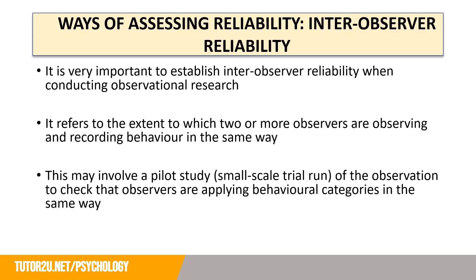The second way of assessing reliability is inter-observer reliability. It's very important to establish inter-observer reliability when conducting observational research. This refers to the extent to which two or more observers are observing and recording behaviour in the same way. This might involve a pilot study — a small-scale trial run of the observation — to check that observers are applying behavioural categories in the same way. Behavioural categories are just ways of measuring behaviour that you are looking to observe. For example, if you are looking to observe someone's happiness level, a behavioural category might be the amount of time somebody smiles. One person sees a smile, so does the other.